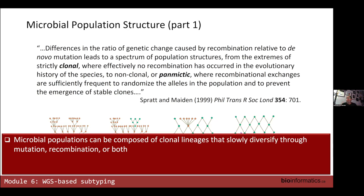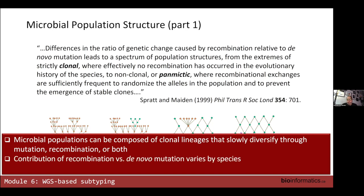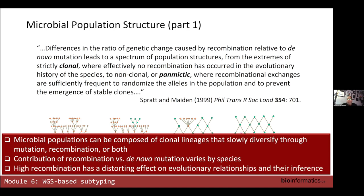Populations are a bit of a mishmash. Recombination and mutation vary by species, and recombination ultimately ruins nice evolutionary analysis, so much so that you have to develop methodologies to screen it out before analyzing data. Programs have been developed to identify areas likely due to recombination so they can be removed.